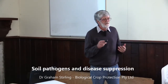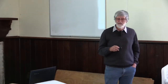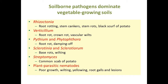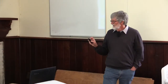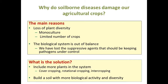Now I want to talk about disease suppression. It doesn't matter what crop you've got, you probably see some pathogens. The problem is it's never just one pathogen, so there's no simple answer to how to deal with it because every pathogen is different. The main reason we have so many pathogen problems in our agricultural soils is firstly we've lost plant diversity - we tend to grow a single crop or a few crops, and we finish up with a biological system that's out of balance.